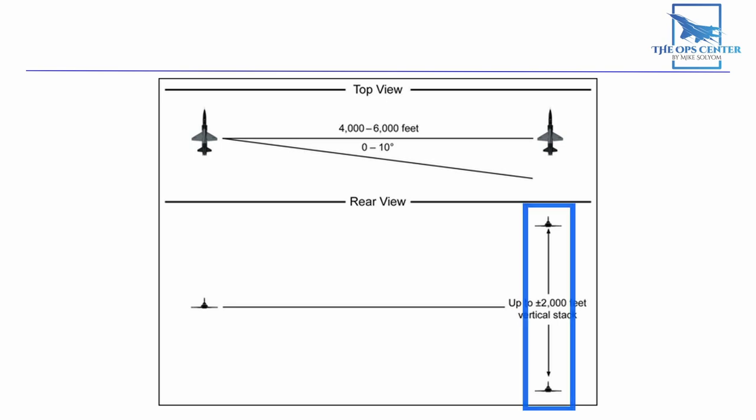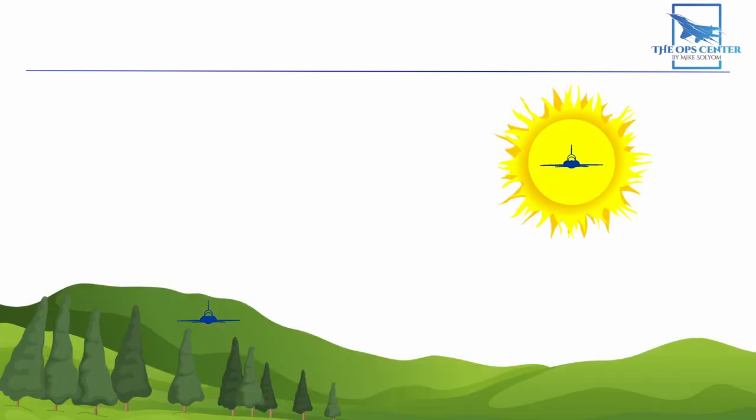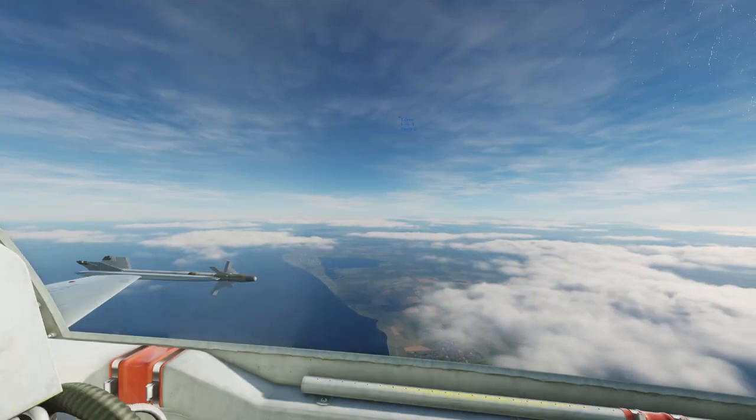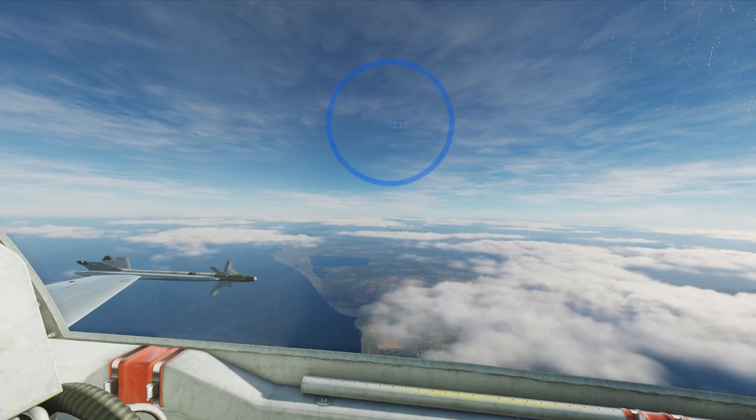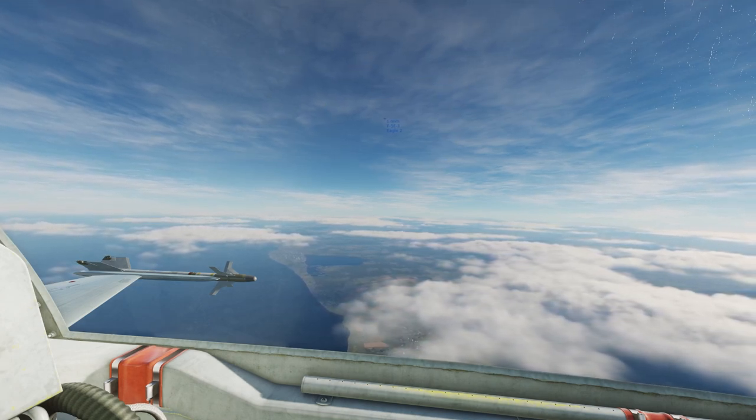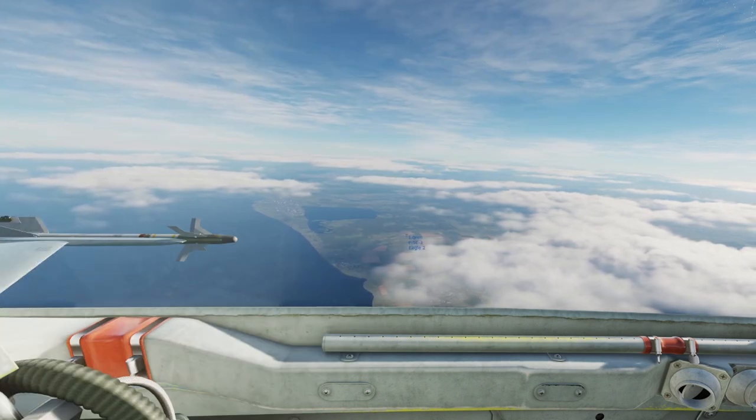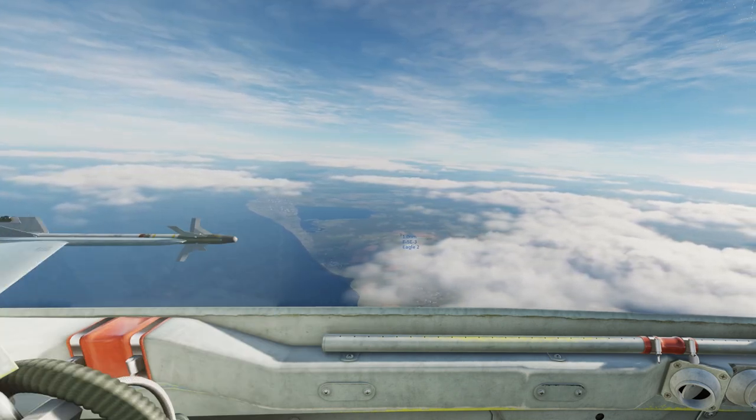The important part here is the vertical split. You want to use every bit of that 2,000 feet to hide your presence, especially if you can get some terrain or the sun behind you. Here's what that tactical formation will look like from inside the cockpit. This fighter is one mile away and 2,000 feet above us. This is what that would look like at 2,000 feet below our altitude.